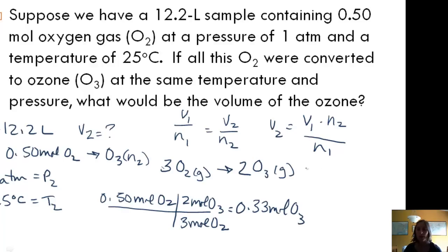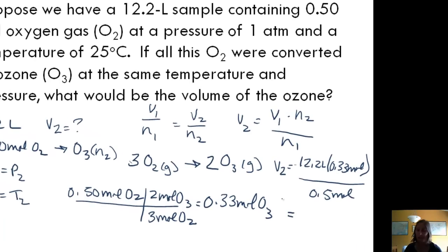So now I can go back up to my V2. My V1 is 12.2 liters. N2 I just solved for. And that's going to be divided by my N1, which is 0.5. And so if I calculate, that gives me an answer of 8.1 liters. So we can see that when we reduce the number of moles, we also reduced our volume.